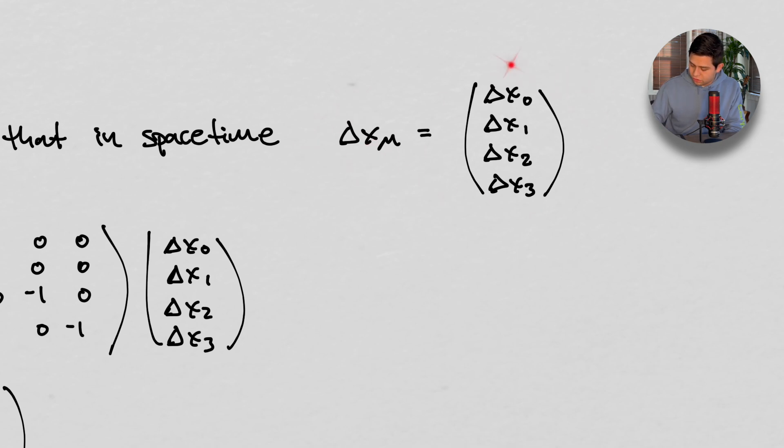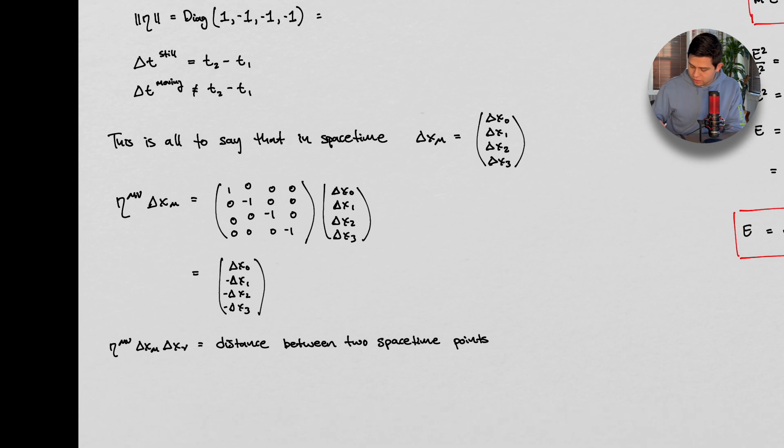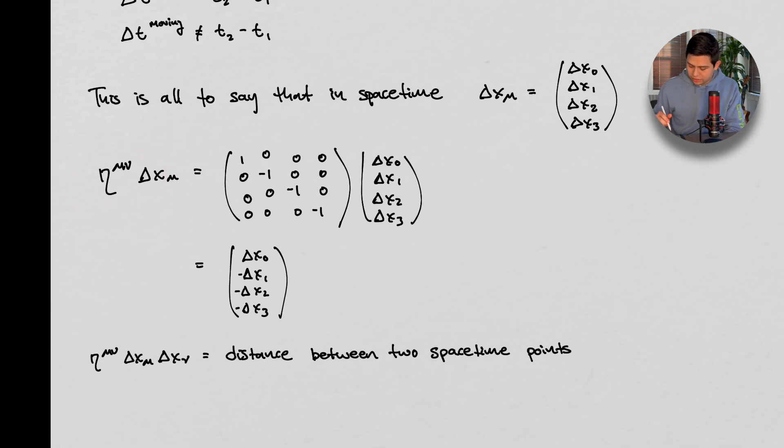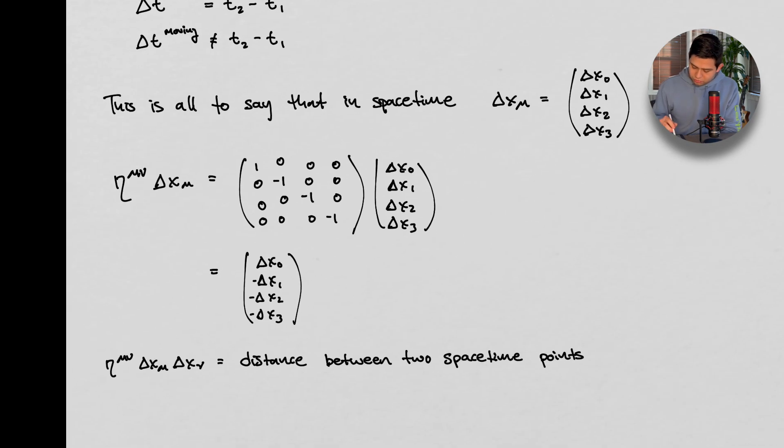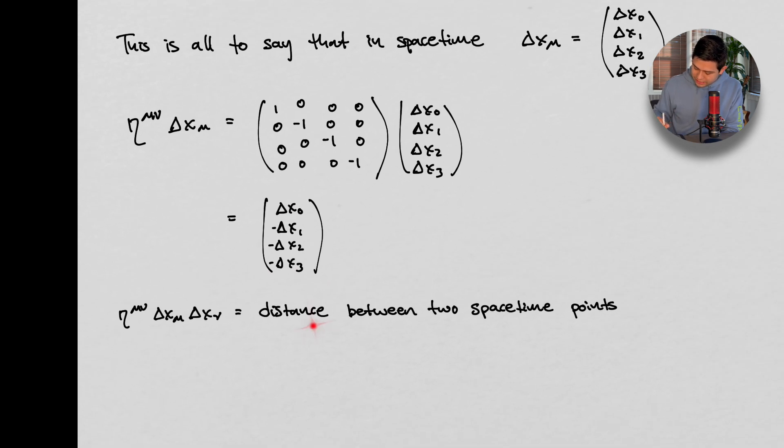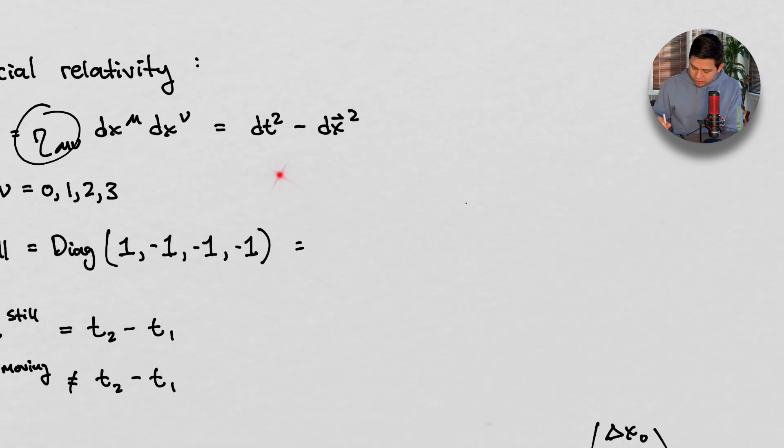This is all to say that in space time, we have Dx_mu is actually a 4 vector. That looks like this. And if we want to understand how we can get this distance here, when we apply our distance to our metric, we get something that looks like this. So this is matrix multiplication. And we get something that looks like this.